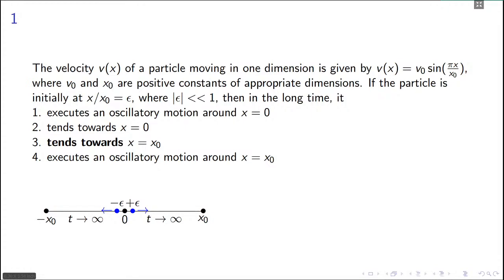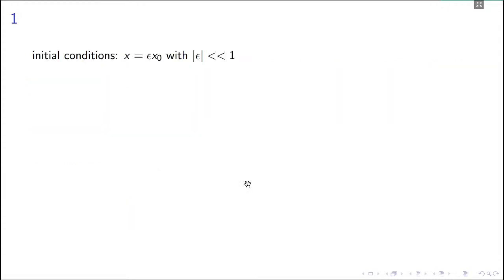That's the correct description. I'll just show you some more calculations here. This is the initial condition: x is ε times x₀ with mod of ε much smaller than 1. So ε is very small but it can be a small negative quantity also. This was your given equation, so velocity or dx/dt is this. Now you just bring this one to this side, so this will become cosec(πx/x₀)dx and this will become v₀dt.